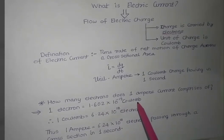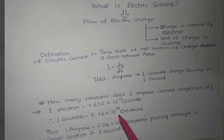So to find out the number of electrons in 1 Coulomb we take the reciprocal of this number which comes out to be 6.24 × 10^18 electrons. Hence 1 Coulomb charge will comprise of 6.24 × 10^18 electrons.